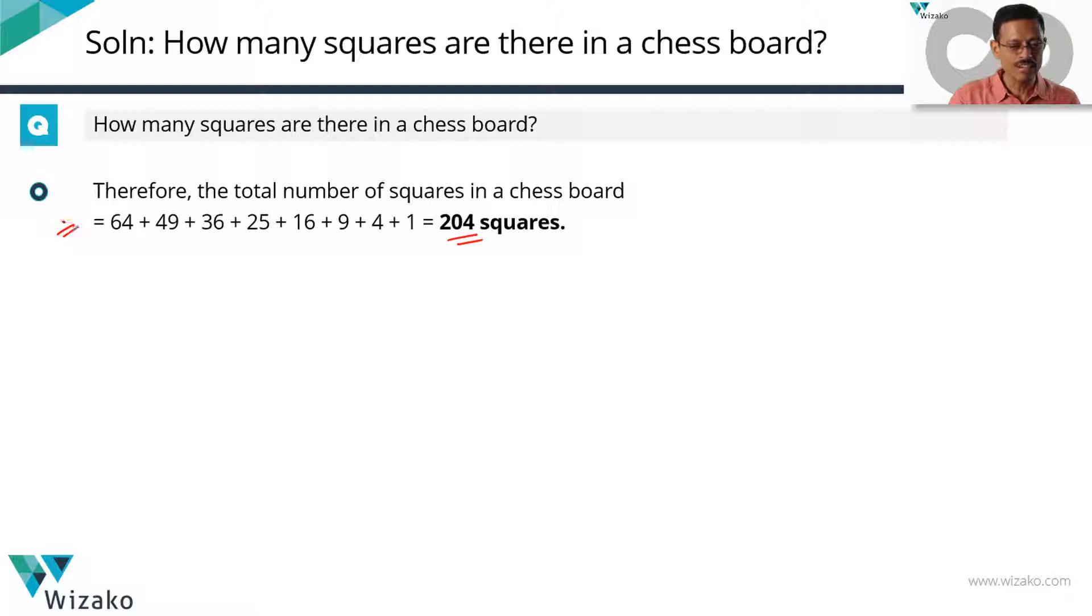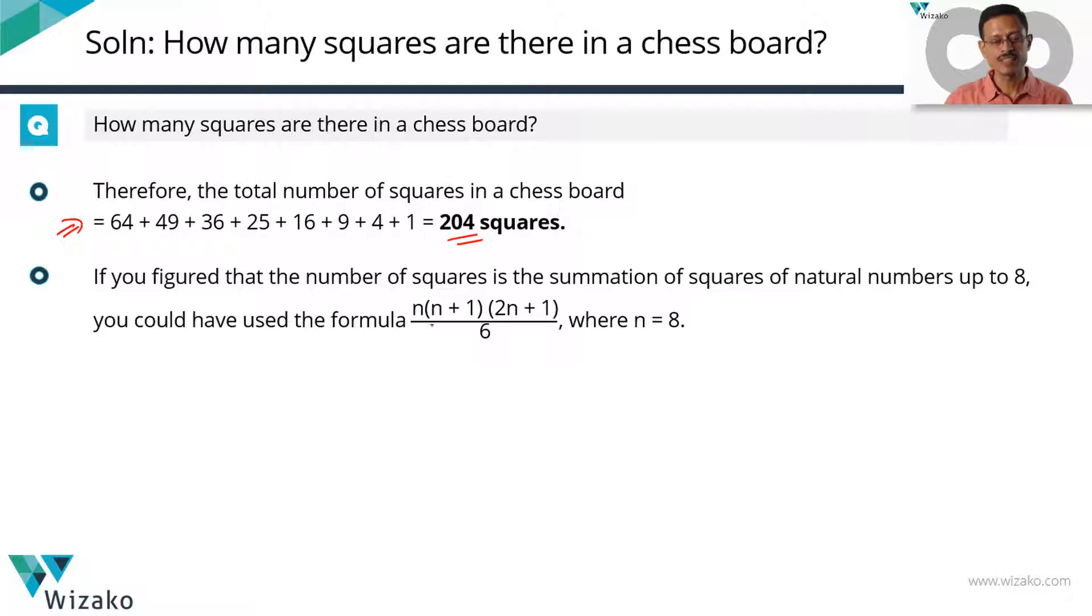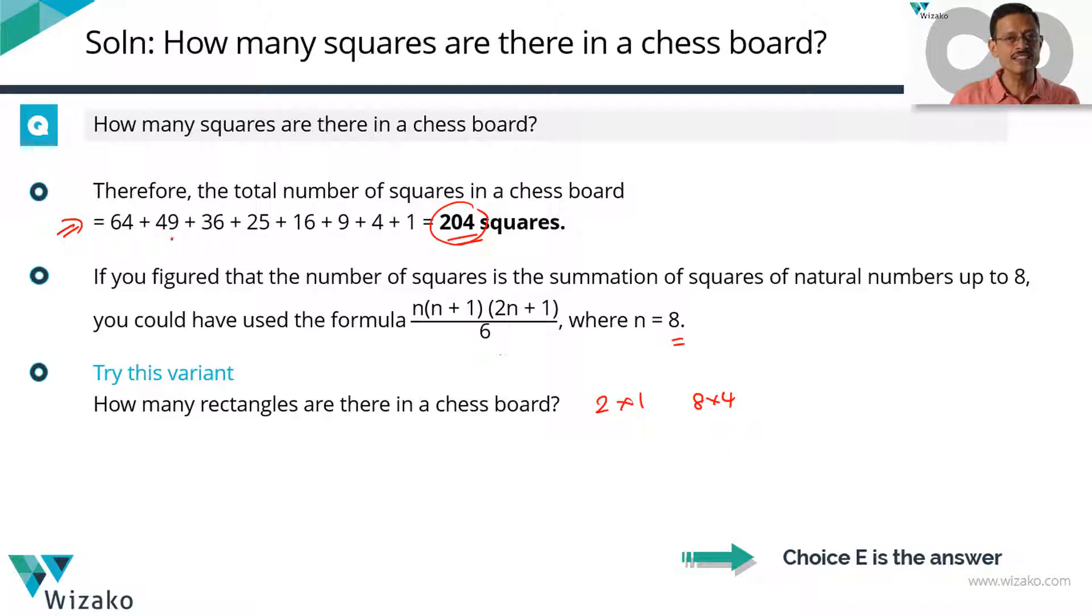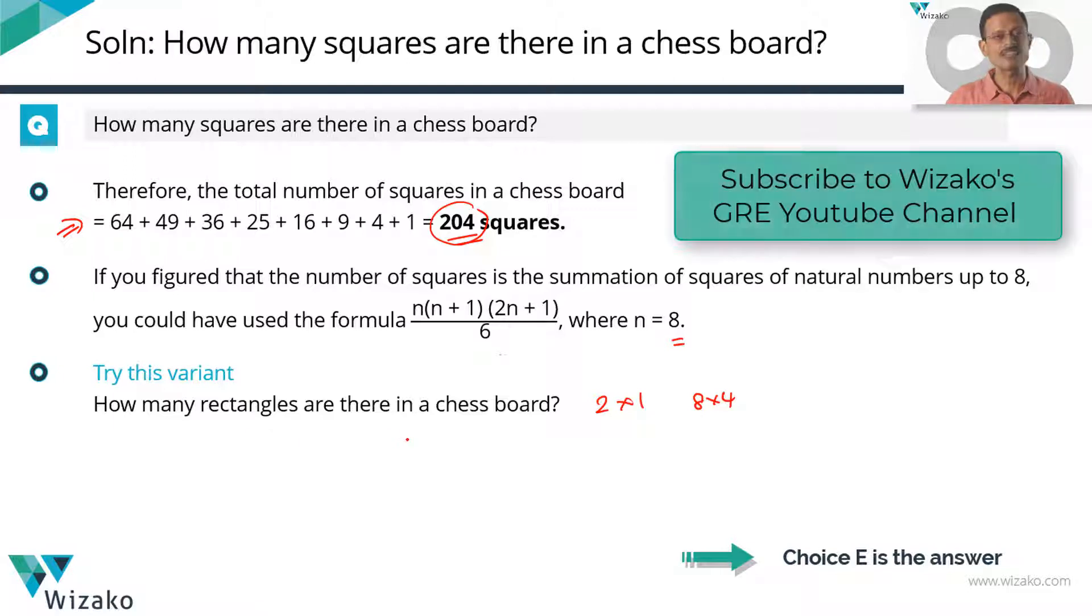You can either manually add it or you can use this formula if you recall. Sum of the squares of the first n natural numbers is n into n plus 1 into 2n plus 1 by 6 where n is equal to 8. I'm going to leave you with a variant of this question. Try this variant which is essentially how many rectangles are there in a chess board? Here are a couple of things to watch out. All of these squares are actually rectangles. Any square is also a rectangle but you could have a rectangle which is 2 units by 1 unit. It could be 8 units by 4 units. All of these are rectangles. Are we going to hand count the way we did it in this case or is there some other better method? Post your answers in the comment section of this video for the number of rectangles in a chess board.